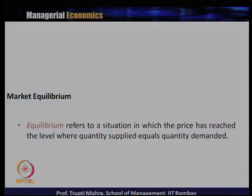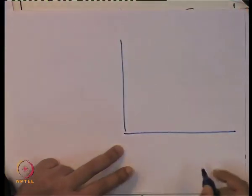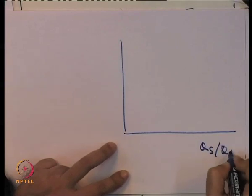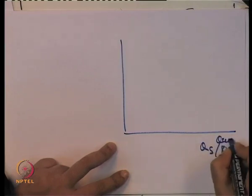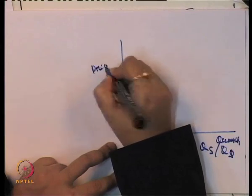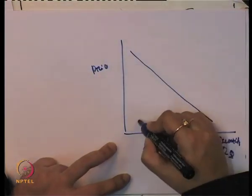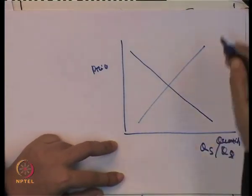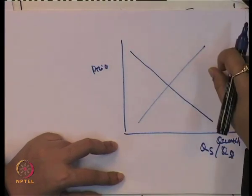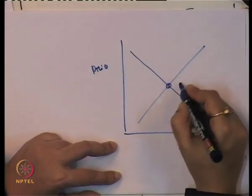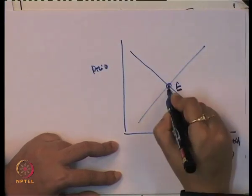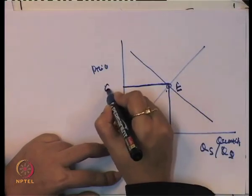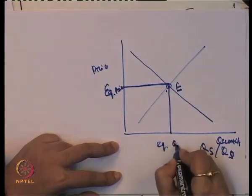Equilibrium refers to a situation in which the price has reached the level where quantity supplied equals quantity demanded. If we look at both market demand and market supply on a graph — with quantity on the x-axis and price on the y-axis — the demand curve is downward sloping and the supply curve is upward sloping. The point at which the demand curve intersects the supply curve is the point of equilibrium, giving us the equilibrium price and equilibrium quantity.